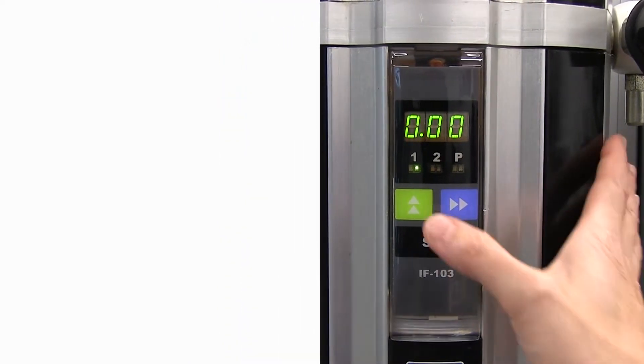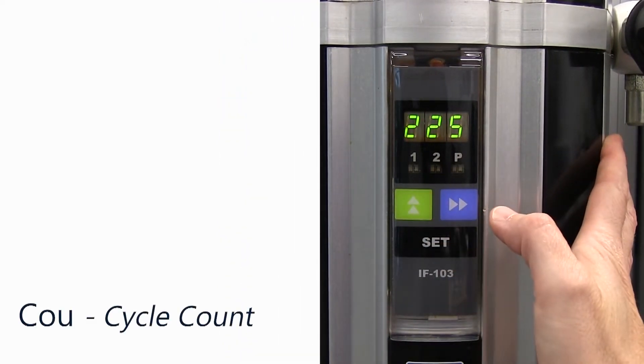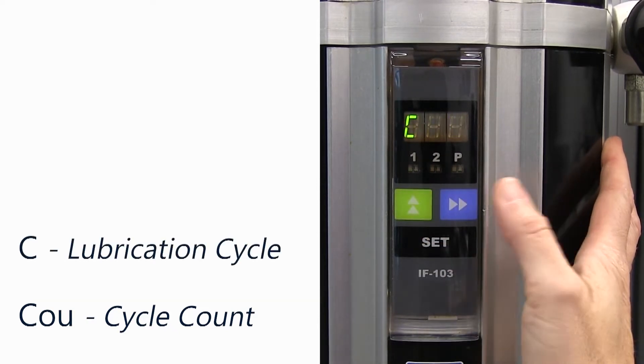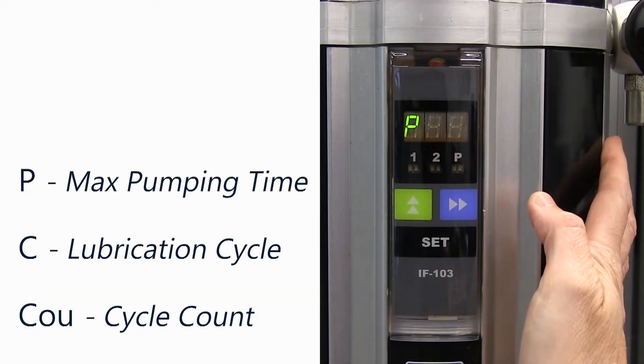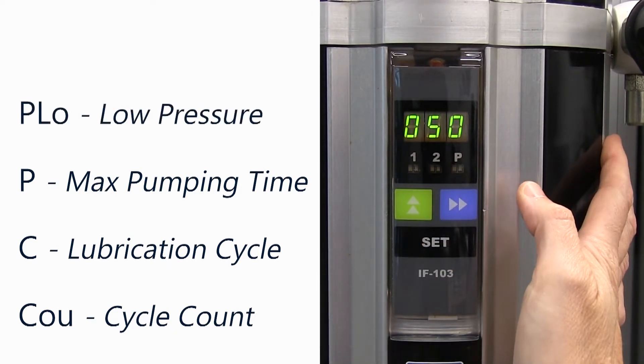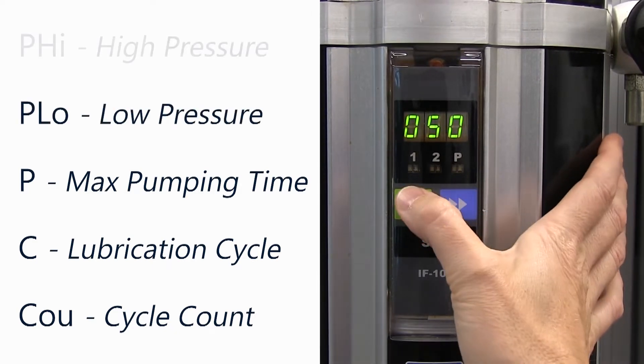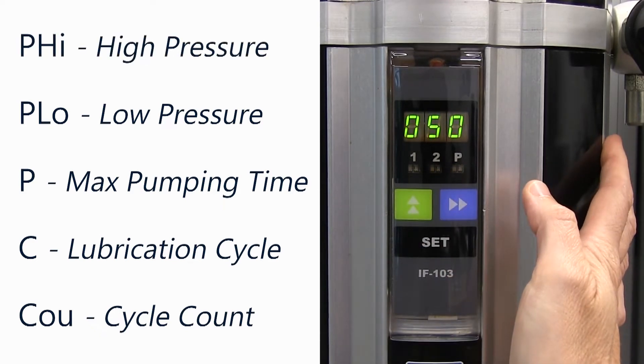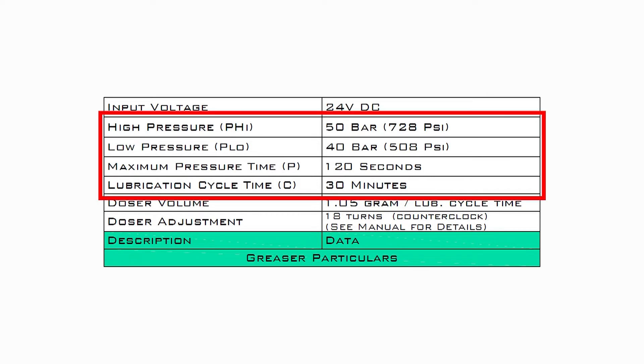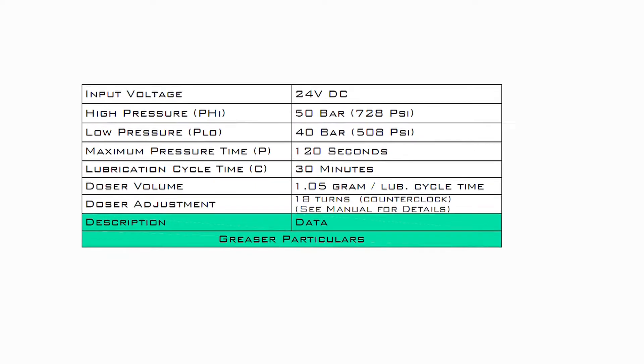Next, press the green up button to navigate through the standard parameters: lubrication cycle (C), maximum pumping time (P), low pressure set point (PLO), and high pressure set point (PHI). Check the values shown on the display against the values in the automatic greaser central piping arrangement drawing.